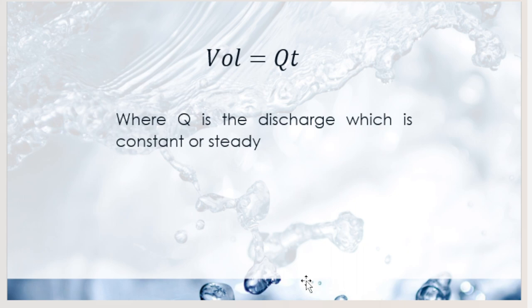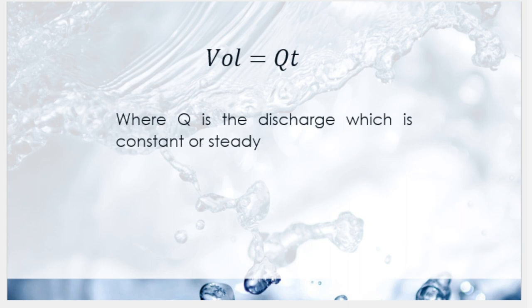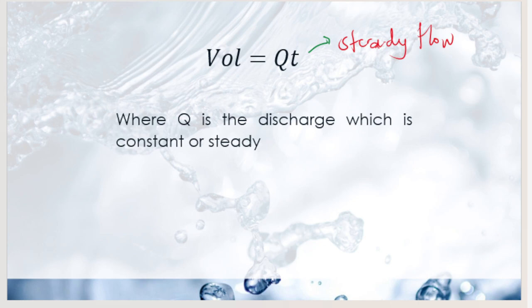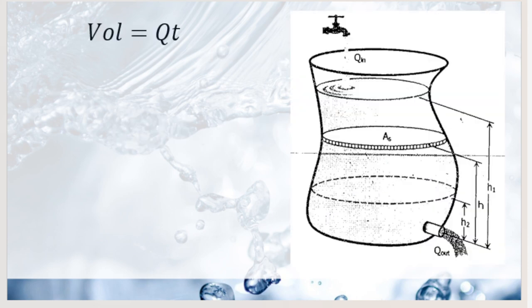For unsteady flow, we start from the idea of the orifice. We know that in computing volume, we multiply discharge by time: V = Q × t. This formula is for steady flow, where Q is the discharge and is constant.